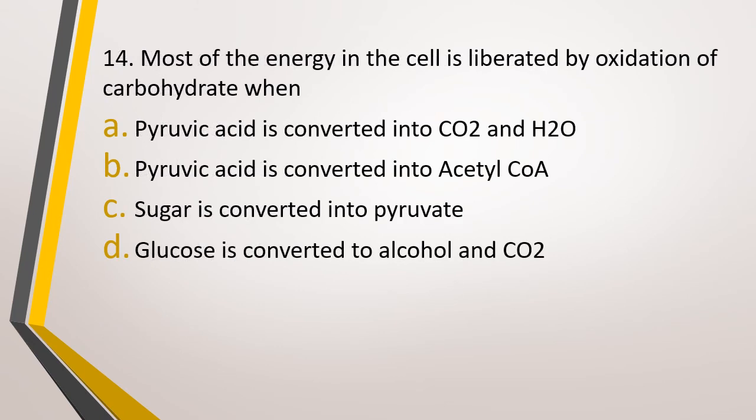Question number 14. Most of the energy in the cell is liberated by oxidation of carbohydrates when? Option A: Pyruvic acid is converted to carbon dioxide and water. Option B: Pyruvic acid is converted to acetyl-CoA. Option C: Sugar is converted to pyruvate. Option D: Glucose is converted to alcohol and carbon dioxide. The correct answer is Option A — when pyruvic acid is converted to carbon dioxide and water.